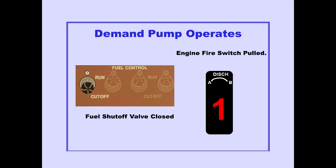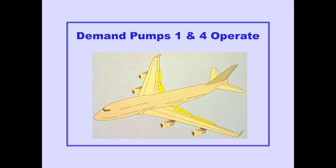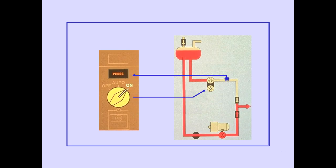A demand pump operates automatically when the fuel shut-off valve is closed by the fuel control switch in cut-off or the engine fire switch pulled. Demand pumps one and four will operate automatically when the trailing edge flaps are in transit, or any time flaps are out of the up position and the airplane is in flight. With the selector on, the demand pump operates continuously. The demand pump low-pressure light illuminates when the demand pump is commanded to operate and output pressure is low.